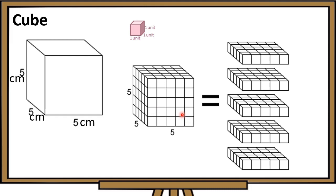Bawat layer ay 25. Ilang layers ba ang ating cube? We have 1, 2, 3, 4, 5 layers — so 5 layers of 25 cubes each. To get the volume of this cube, bibilangin mo lahat ng maliliit na cubes: 25 plus 25 equals 50, plus 25 equals 75, plus 25 equals 100, plus 25 equals 125. So ibig sabihin, 125 yung volume ng ating cube.